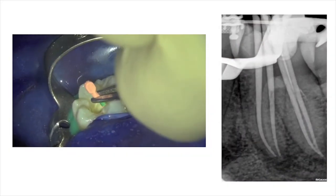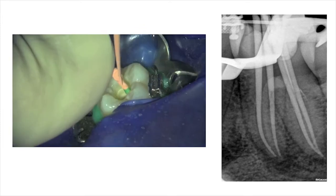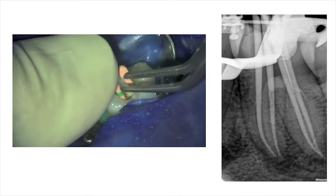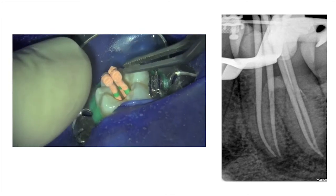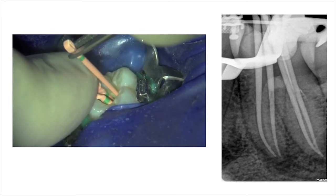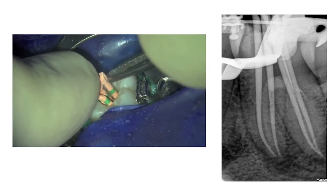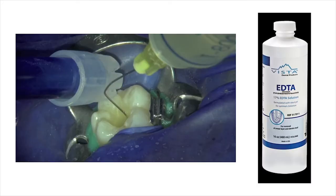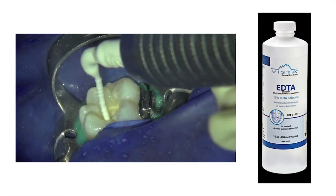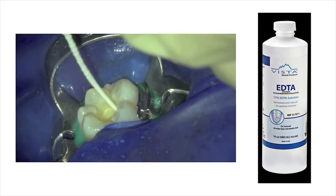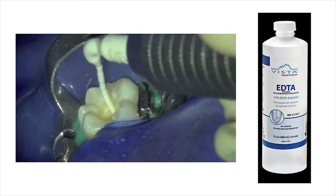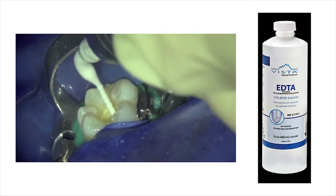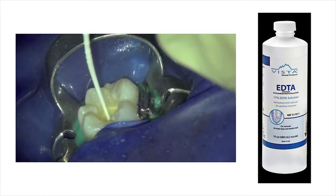After root canal preparation, four size medium WaveOne Gold gutta-percha points were fitted into the prepared root canals and the fit of the cones was verified radiographically. The canals were filled with 17% EDTA and the solution was activated with the Eddy irrigation device from VDW for approximately 2 minutes to remove the smear layer.